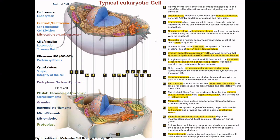Then there are peroxisomes — they contain enzymes that break down fatty acids into smaller molecules used for biosynthesis, and also detoxify harmful substances. The cell is protected because these reactions are enclosed within the peroxisome. The plasma membrane, lysosomes, nuclear envelope, rough endoplasmic reticulum, Golgi complex, and secretory vesicles are collectively called the endomembrane system, as they modify, package, and transport lipids and proteins.